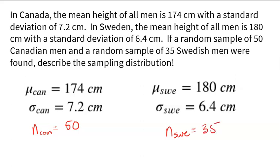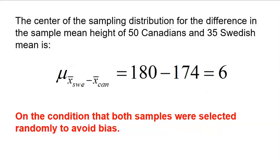I want to build a sampling distribution to show all possible differences between a sample of 50 Canadian men and 35 Swedish men. It all starts with understanding the center. What would the mean of all those possible differences be? If I took a sample of Swedish men and a sample of Canadian men, I could get a whole lot of different differences. But the mean of all of them should be the truth. If the true average for Swedish men is 180, Canadian men 174, there should be a difference of six centimeters.